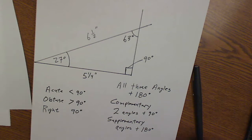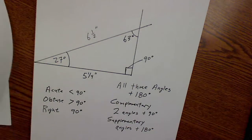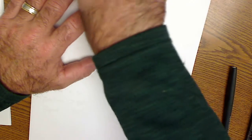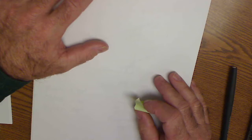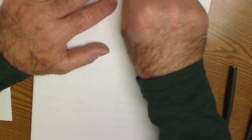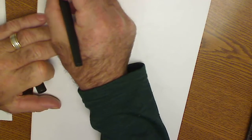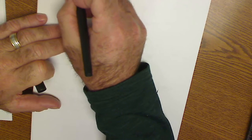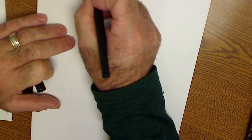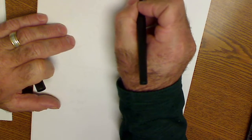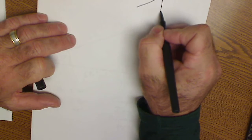My last video is on measurement. I just want to talk about probably the most useful theorem in woodworking or construction, and that's the Pythagorean theorem. The Pythagorean theorem, named after Pythagoras — first off, it only works in right triangles.